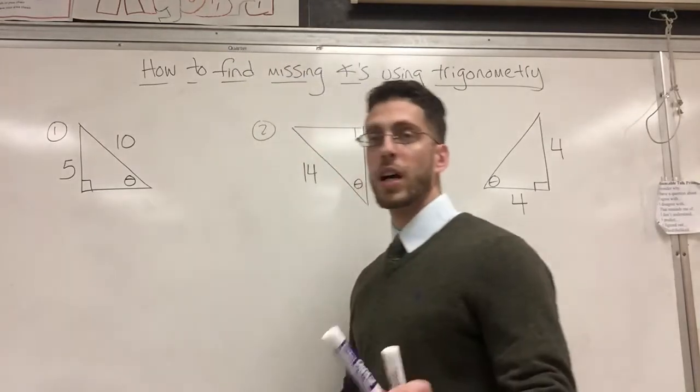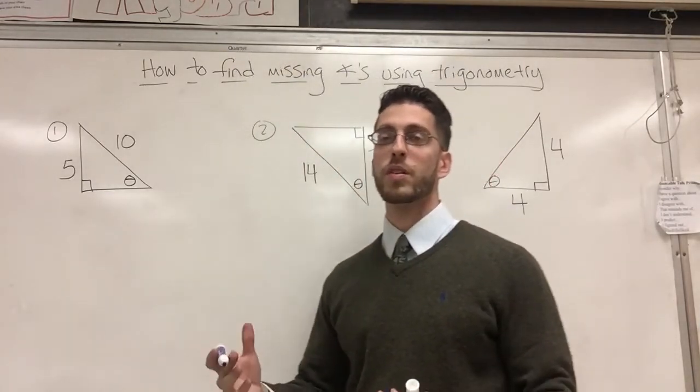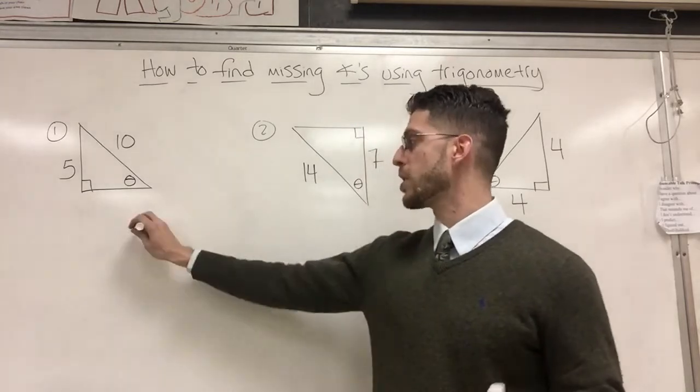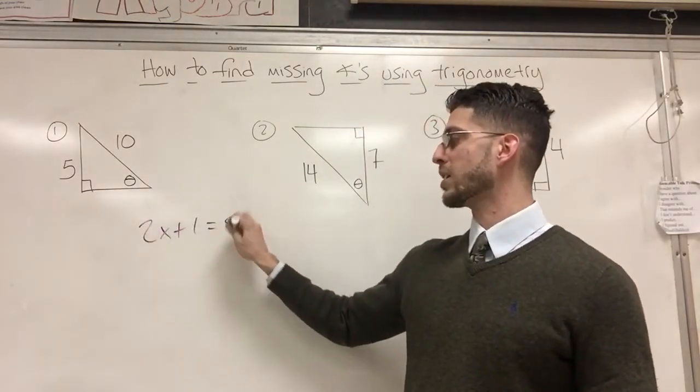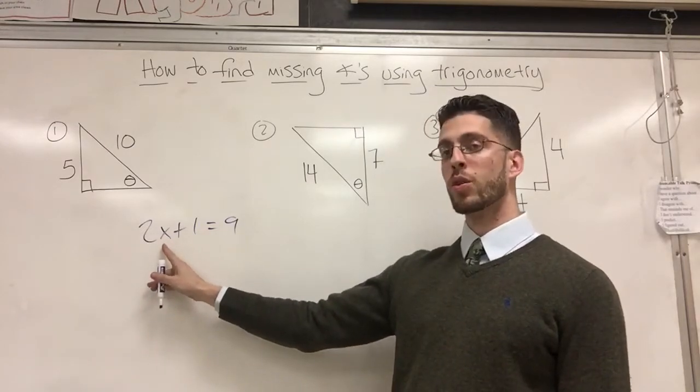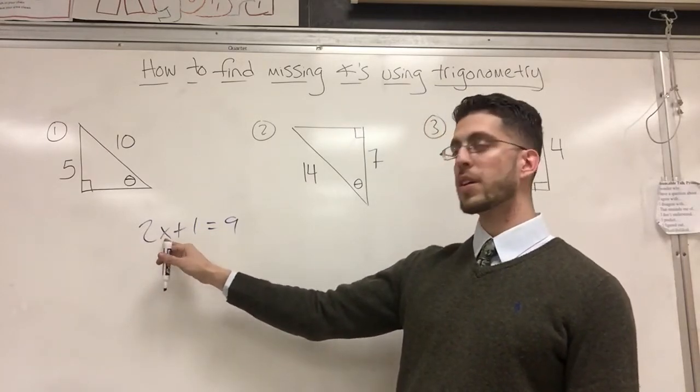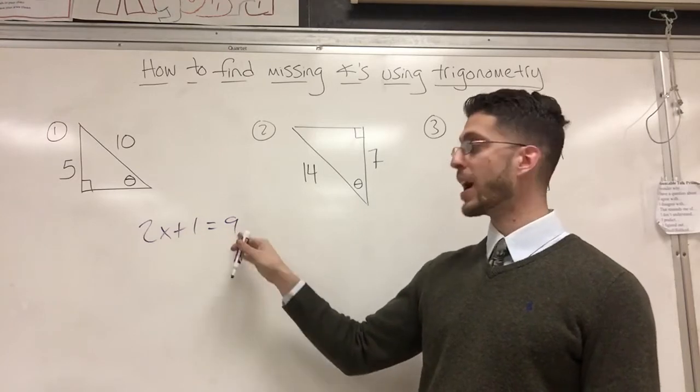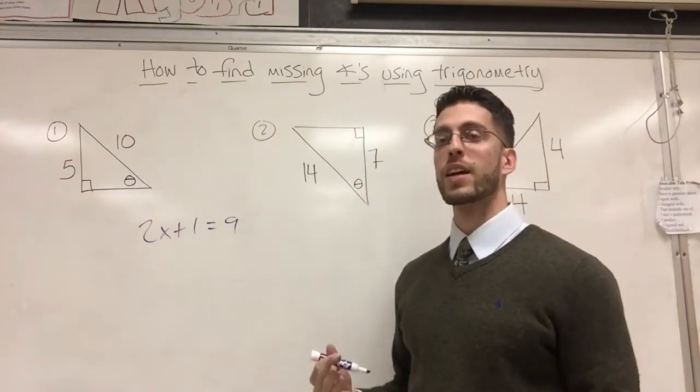Another concept you should know is the concept of finding an unknown. For example, let's say you have 2x plus 1 equals 9. This is a basic two-step equation. How do you find an unknown? So it's like you did something to the x, you doubled it, you added 1, and you got 9. You have an answer here.